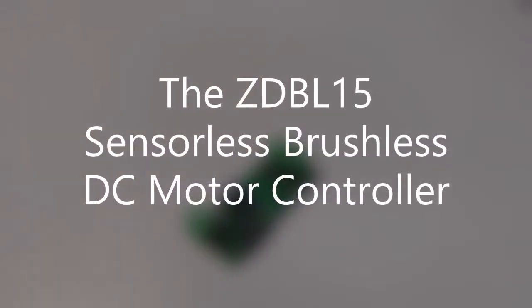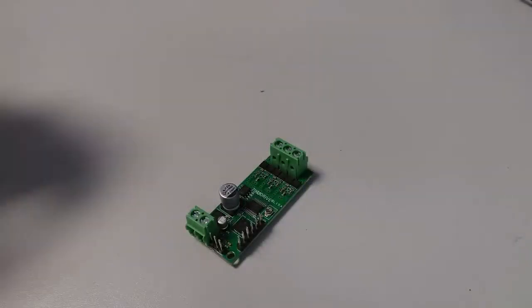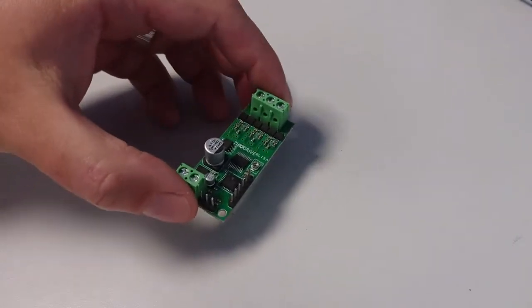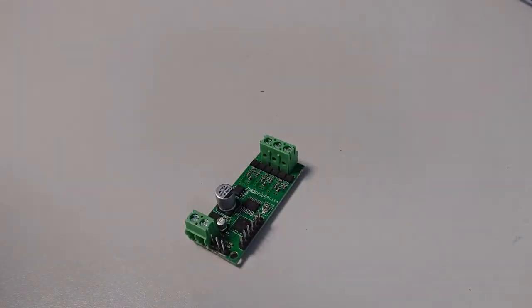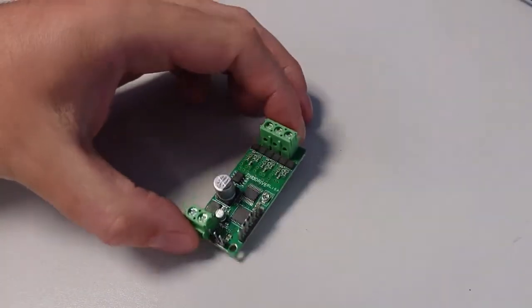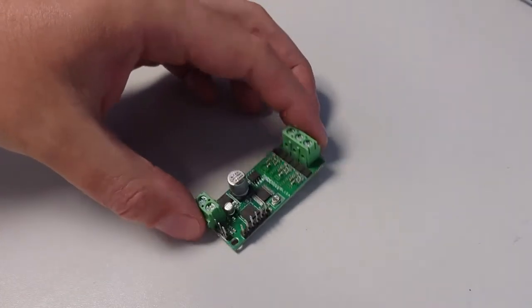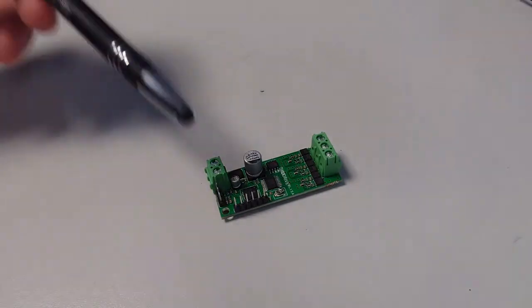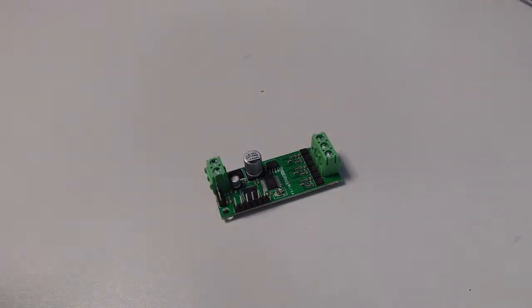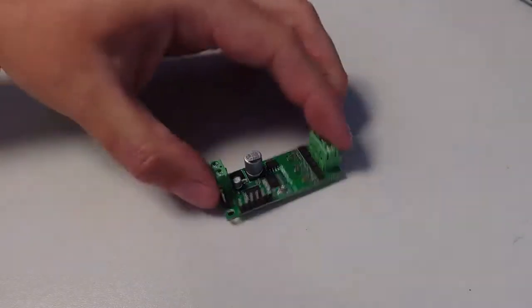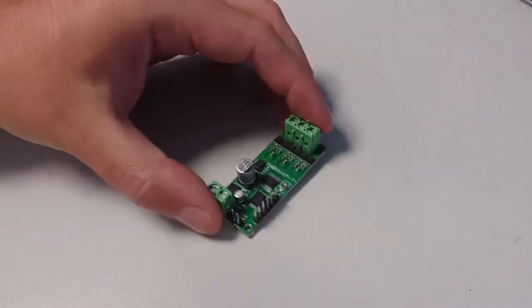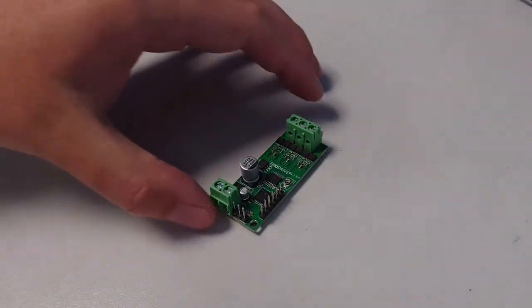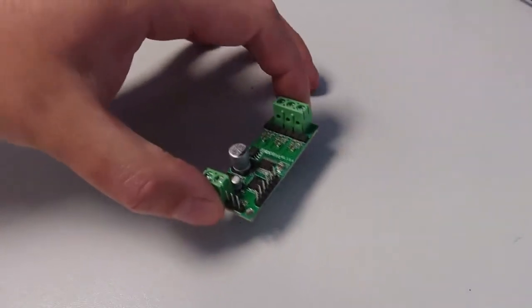Hello and welcome to this basic introduction guide to the Zico Drive ZDBL15 sensorless brushless motor controller. The BL15 is a compact, straightforward controller designed in-line. You can see you've got power in here, motor phase wires there, and some basic connections. It's designed as a straightforward but robust controller.